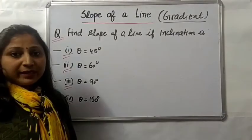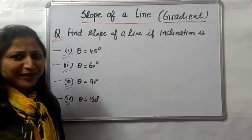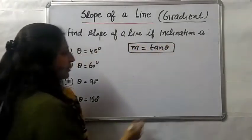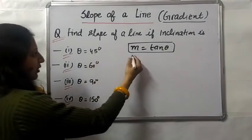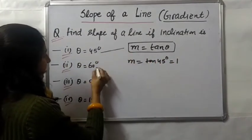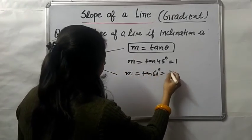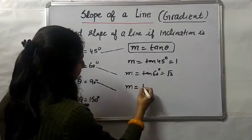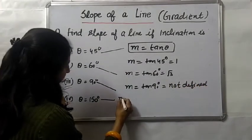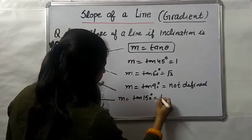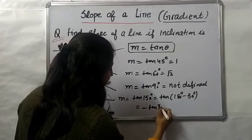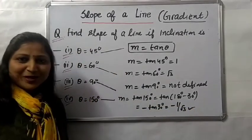Next question: find the slope of a line given its inclination. Using m = tan θ — Case 1: θ = 45°, m = tan 45° = 1. Case 2: θ = 60°, m = tan 60° = √3. Case 3: θ = 90°, m = tan 90° = not defined. Case 4: θ = 150°, m = tan(180° − 30°) = −tan 30° = −1/√3.